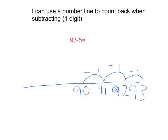You've got 2 left to take, so take another 1. 90 take 1 is 89. You've got 1 left to take, so take 1, and then you will find your answer. Your answer is 88.